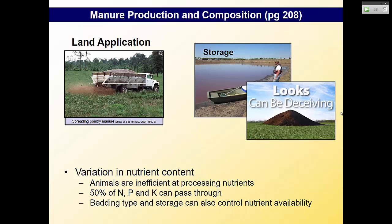We also have to think about bedding type and storage. How the manure is stored — a lagoon versus a pile in the field — affects how nitrogen cycles and how microbes are active. Depending on the bedding, the carbon-to-nitrogen ratio can affect how that nitrogen is available.